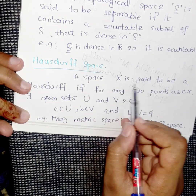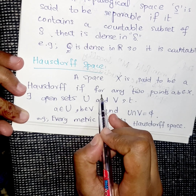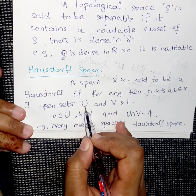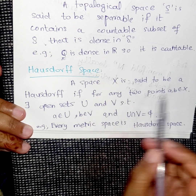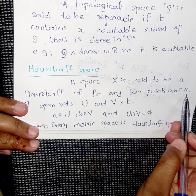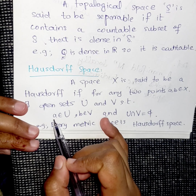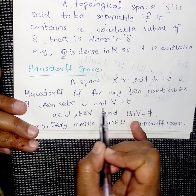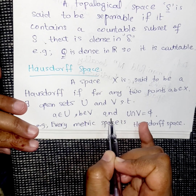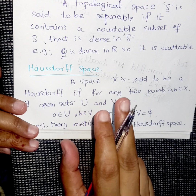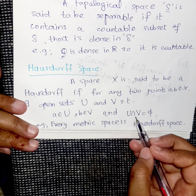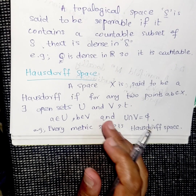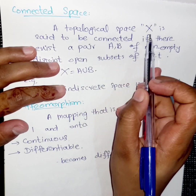A space X is said to be a Hausdorff space if for any two points a and b belonging to X, there exist open sets U and V such that a belongs to U, b belongs to V, and U intersection V is equal to the empty set. For example, every metric space is a Hausdorff space.